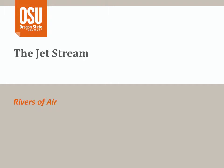In this lecture I will cover some details of the jet stream, a river of air marked by higher than average winds that forms at the boundary between the troposphere and stratosphere. At the conclusion of this video you should be able to describe the jet stream, where it forms, and provide examples of how the jet stream impacts weather and how the jet stream is impacted by the movement of air masses.